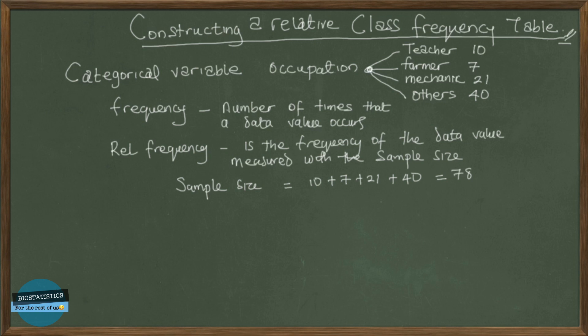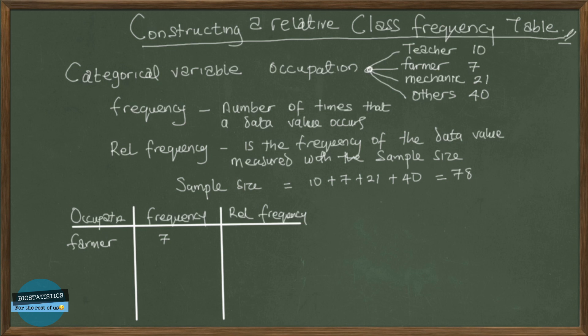So now let's draw the table very quickly. So we put up a table and then here we have occupation. We put the frequency and now since we're looking for relative frequency, we put relative frequency there. And let's put up the occupations. We have the farmer and 7, the teacher is 10, we had 21 mechanics and then the other was 40 and our total is actually 78.